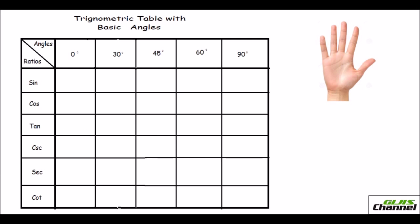Hi, this is Vasavi. I am going to explain to you the trick to remember the trigonometric values of basic angles. Most of us wholly rely on calculators for such calculations, but it is good to learn basic trigonometric values for angles like 0, 30, 45, 60, and 90 degrees. All you need to do is learn the sine values by heart, and with that we can complete the whole table.